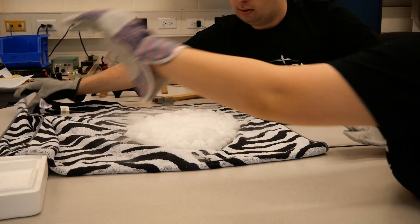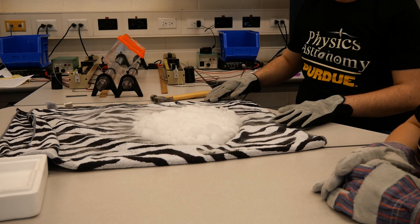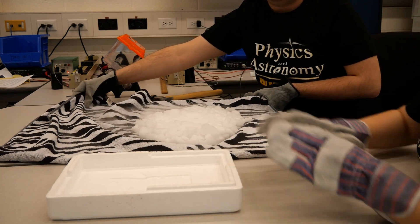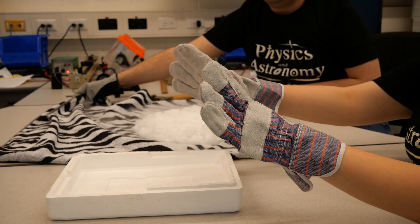Once you've finished crushing your dry ice, go ahead and use the towel to slide it into the styrofoam tray. If you need to get a second person to help you, make sure they wear gloves as well.